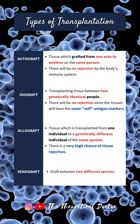Here are the different types of transplantation. In autograft, it is from one area to another on the same person. Usually, no rejection will occur. In isograft, it is between two genetically identical people and usually no rejection will occur.